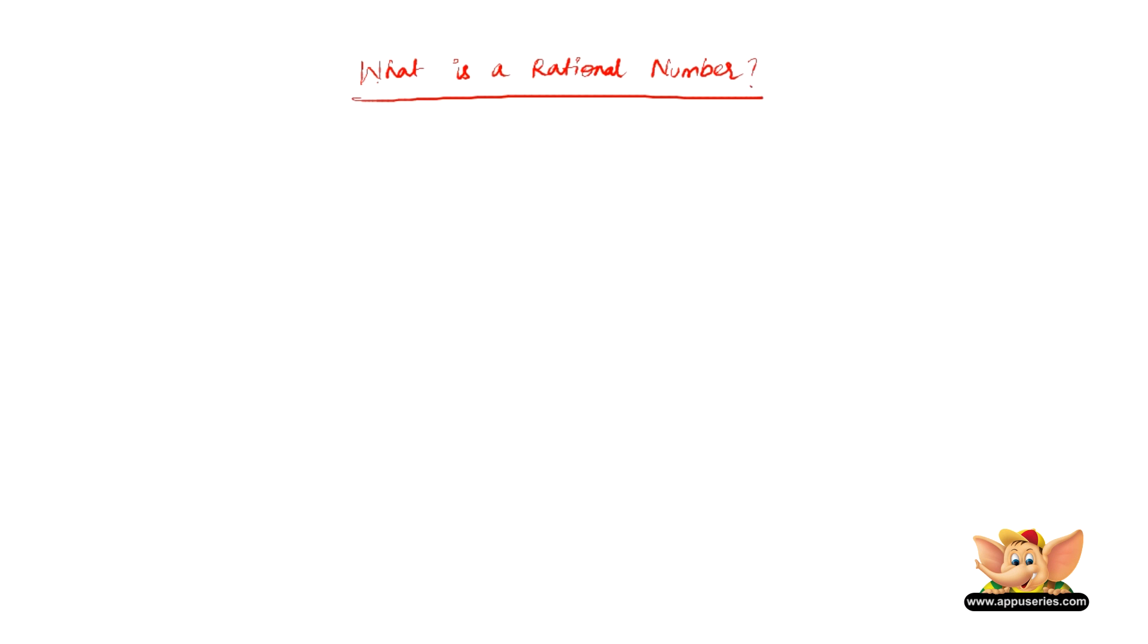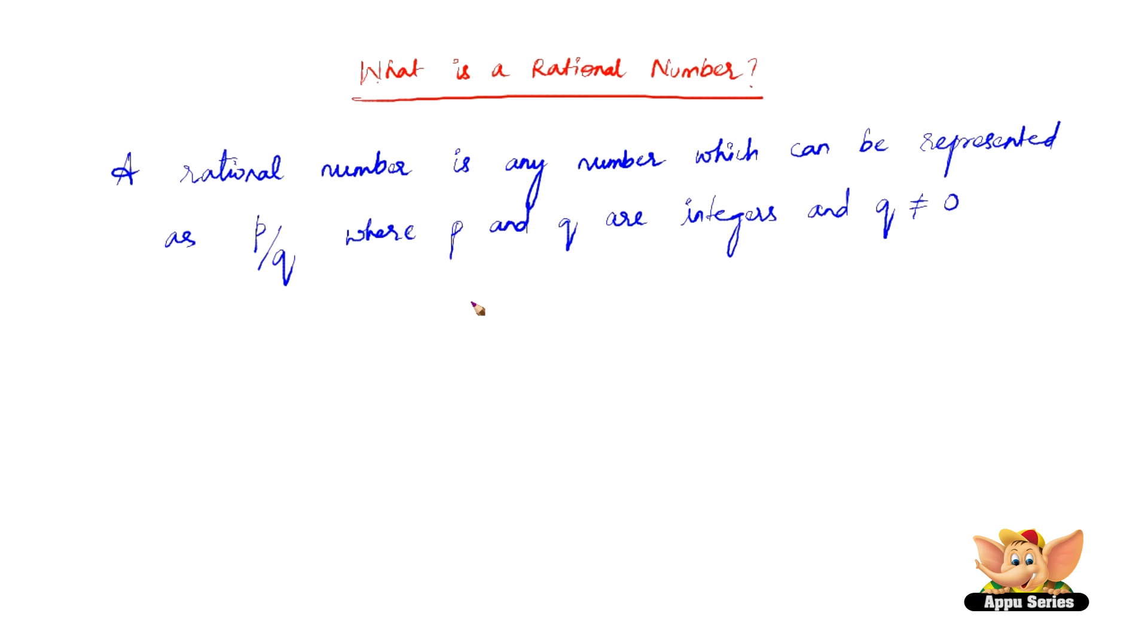Let us see what is a rational number. A rational number is any number which can be represented as P by Q, where P and Q are integers and Q should not be equal to 0.